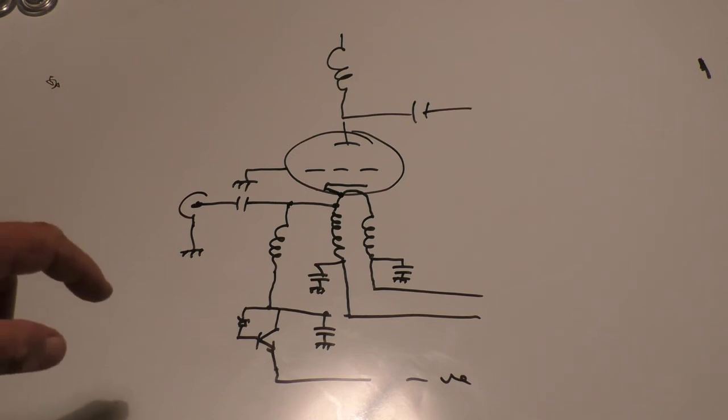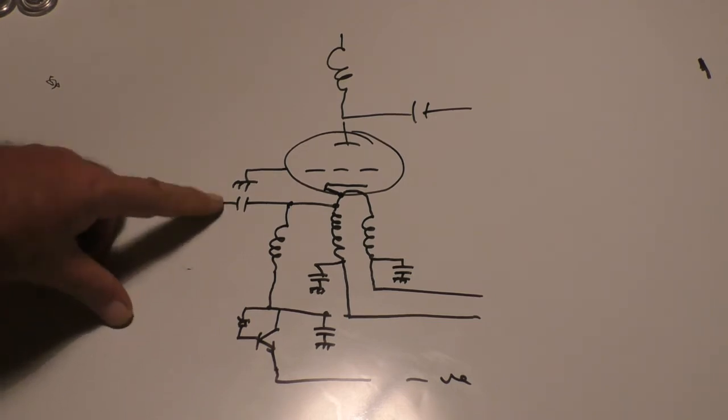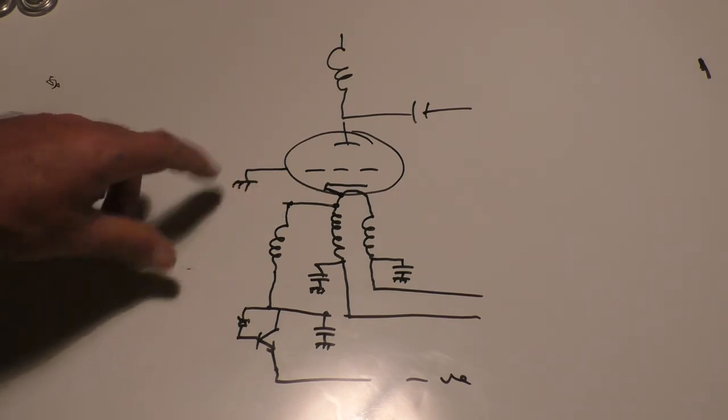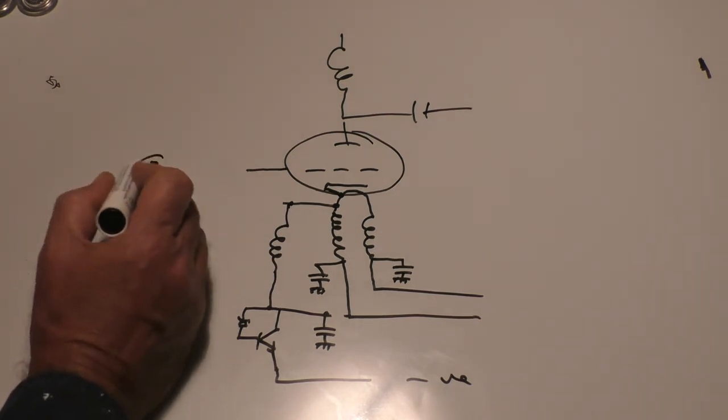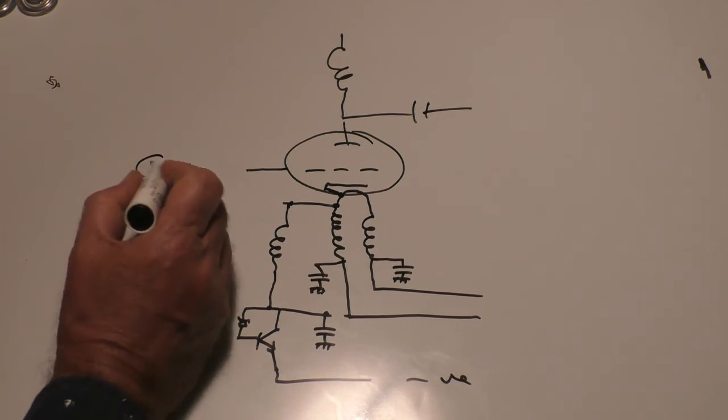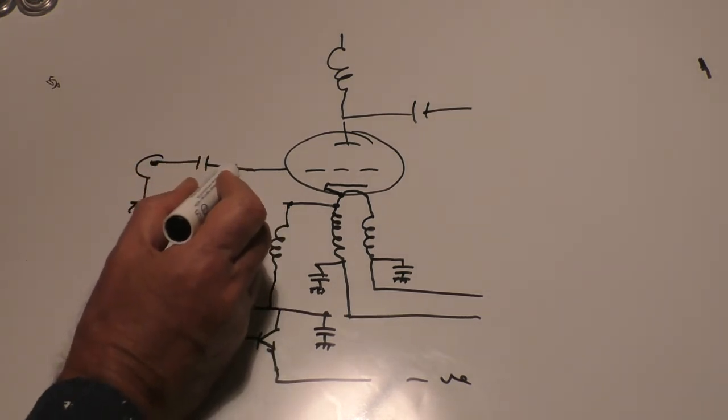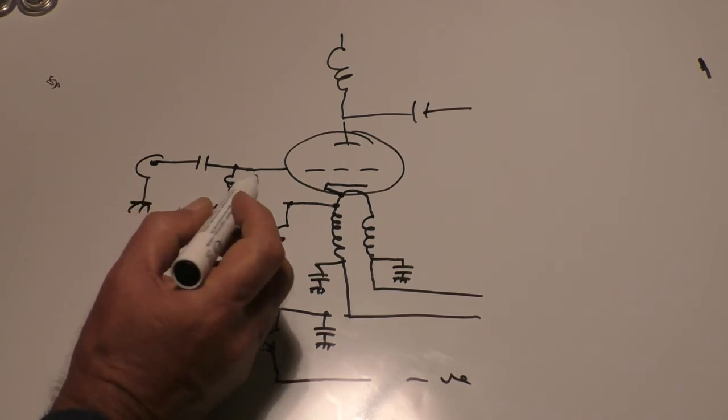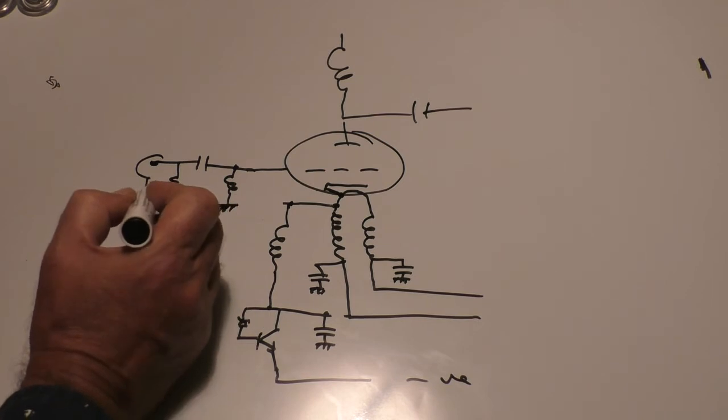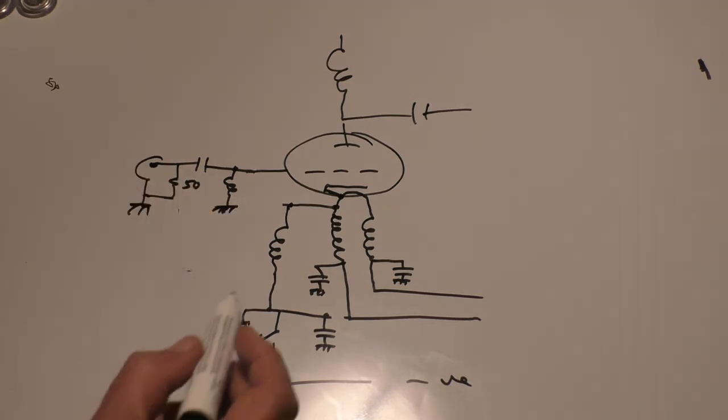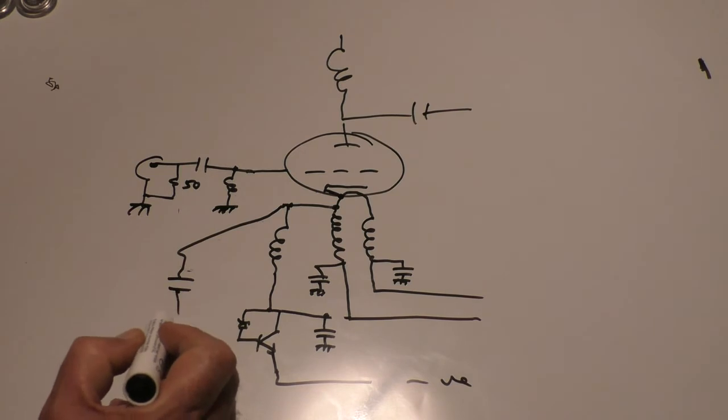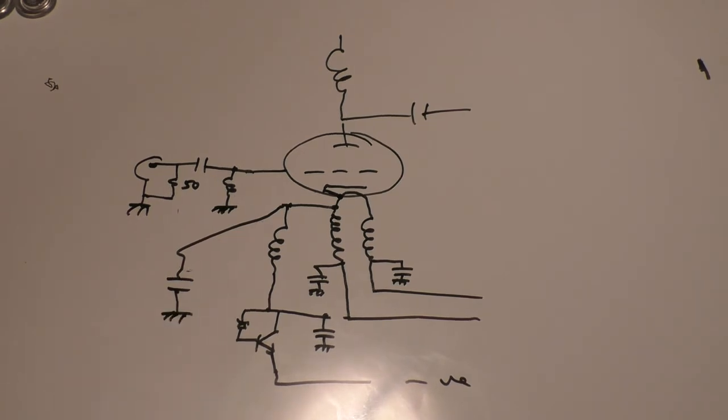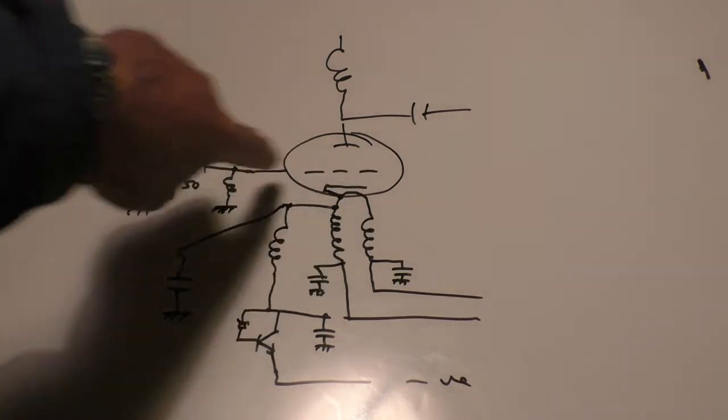So I thought right let's try driving the grid and see if that makes any difference. So all I did was took that off of there, put the RF into the grid like that and an RF choke going to ground, 50 ohm resistor across there like that and then put a 2200 puff capacitor between the cathode and ground to give the cathode a direct RF path to ground.